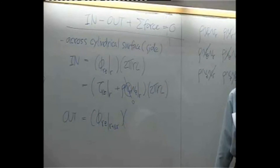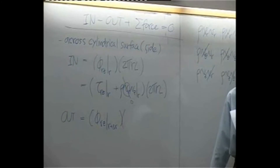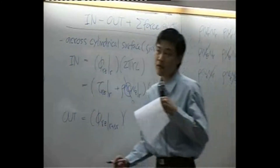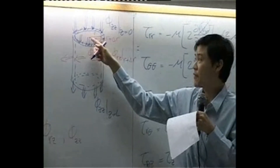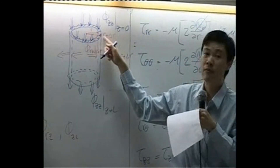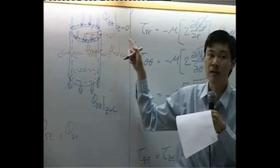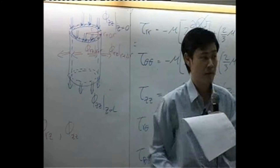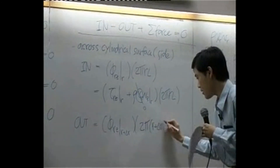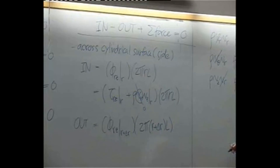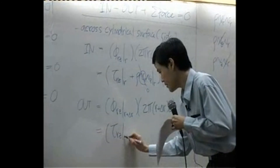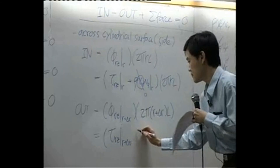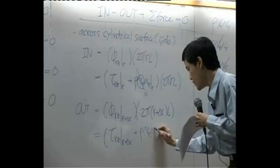For the output, it becomes VRZ at r plus delta r, multiplied by the area perpendicular to the flux on the outer side. The radius there is r plus delta r, so the area is 2π(r + Δr)·L. This again reduces to tau_rz at r plus delta r, since rho*vr*vz equals zero.